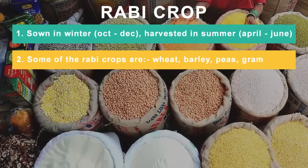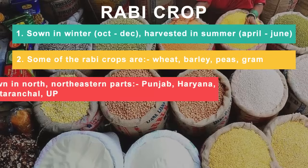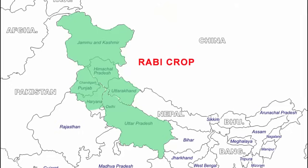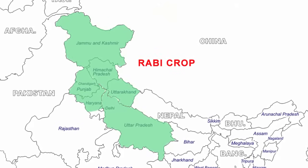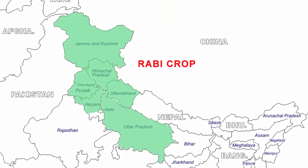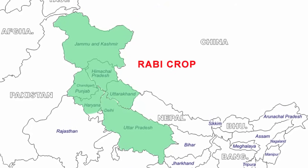Some of the important Rabi crops are wheat, barley, peas and gram. These crops are grown in large parts of India, especially places near the north and northwestern parts, such as Punjab, Haryana, Himachal Pradesh, Jammu and Kashmir, Uttaranchal and Uttar Pradesh.